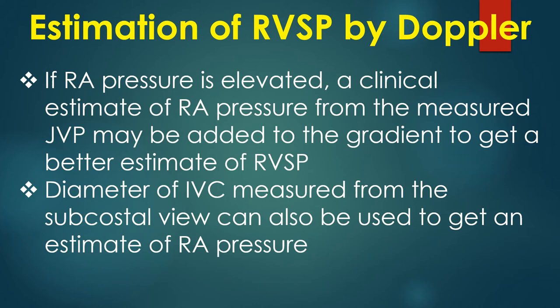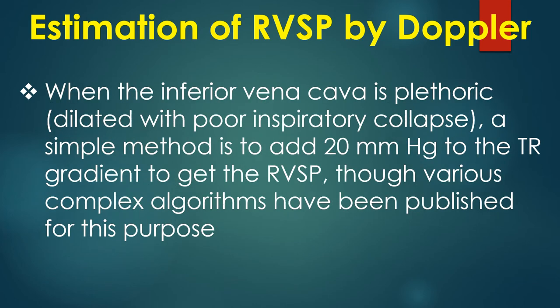Diameter of the inferior vena cava measured from the subcostal view can also be used to estimate the right atrial pressure. When the inferior vena cava is plethoric — dilated with poor inspiratory collapse — a simple method is to add 20 mmHg to the TR gradient to get the RV systolic pressure.